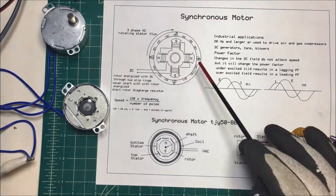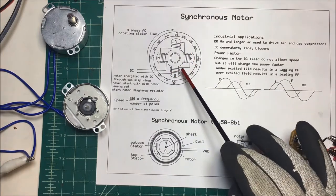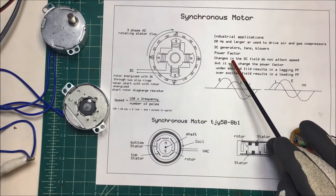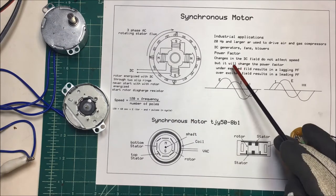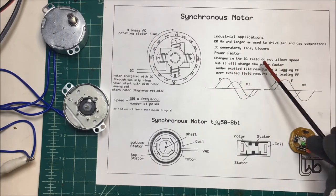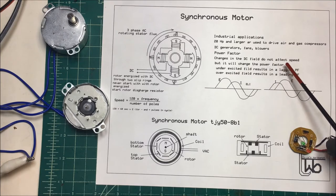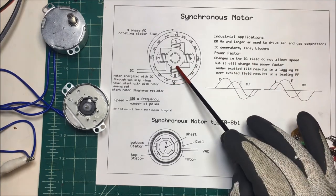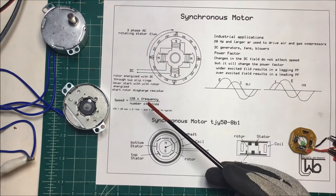The reason they use these in industrial applications is that they can correct the power factor. Most of the time they use them for air handling equipment because it just stays on all day long. If you change this magnetic field here, it doesn't affect the speed but it changes the power factor.